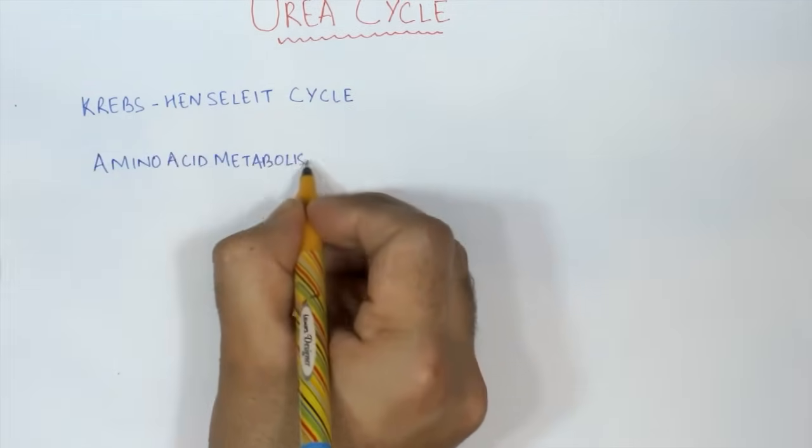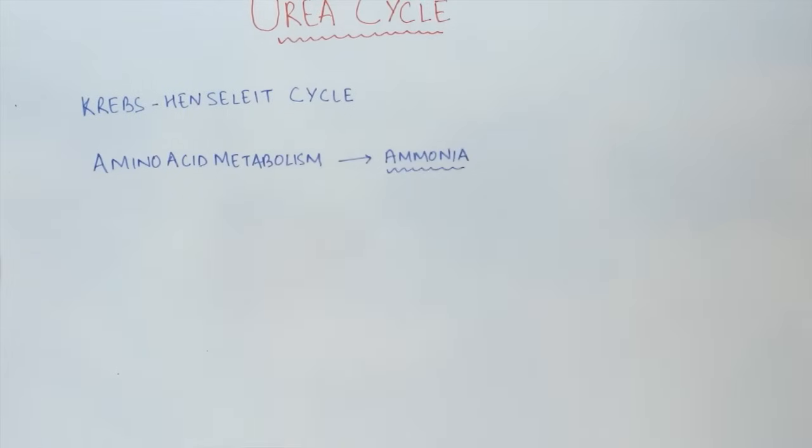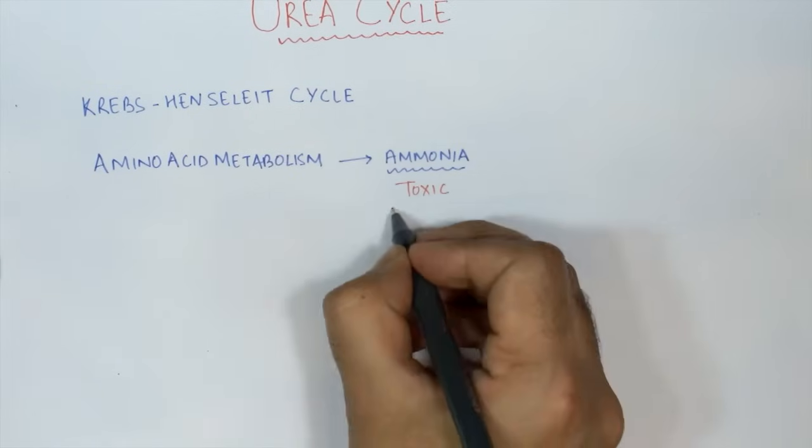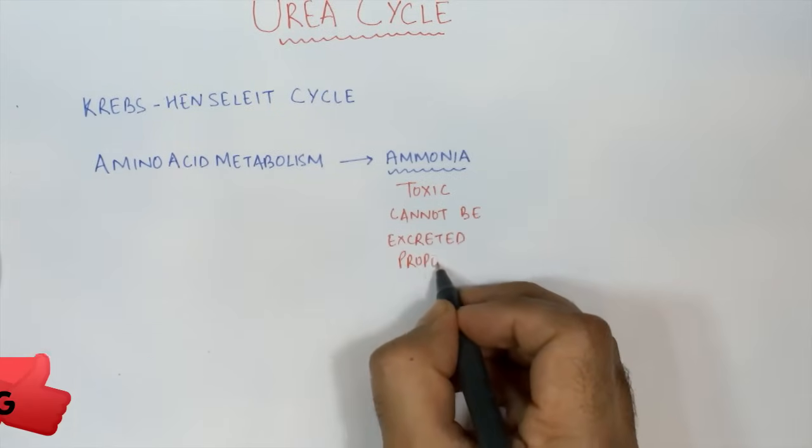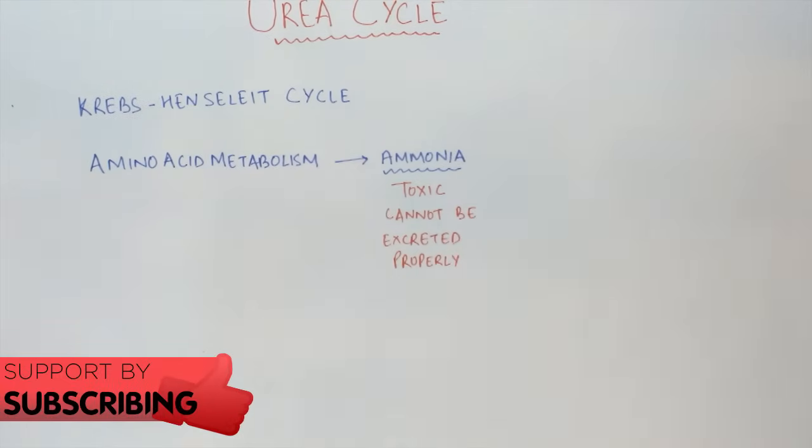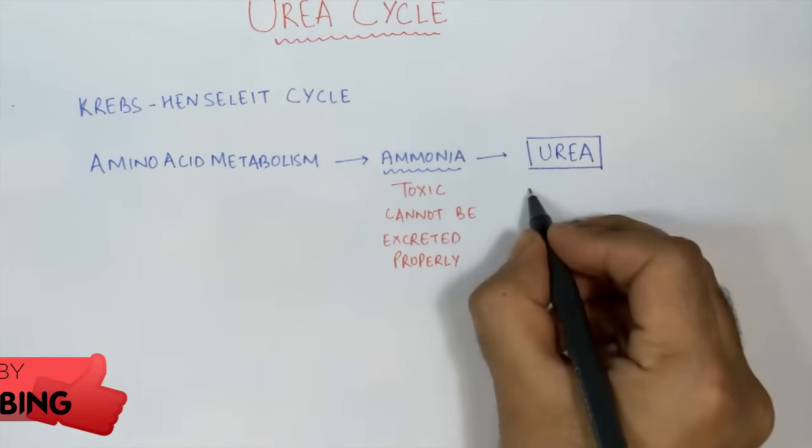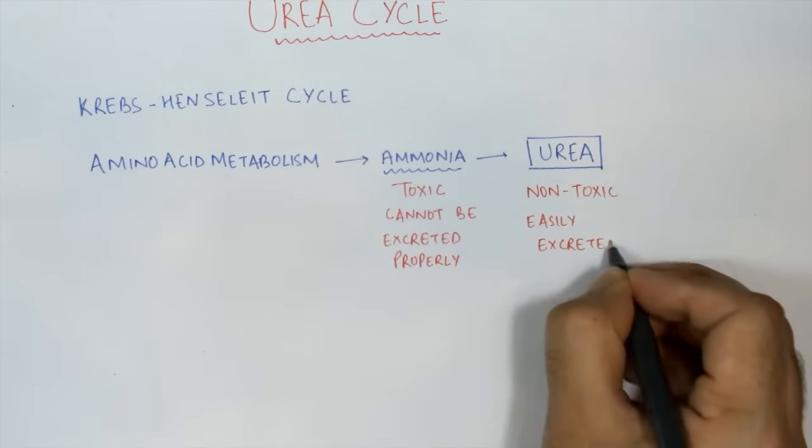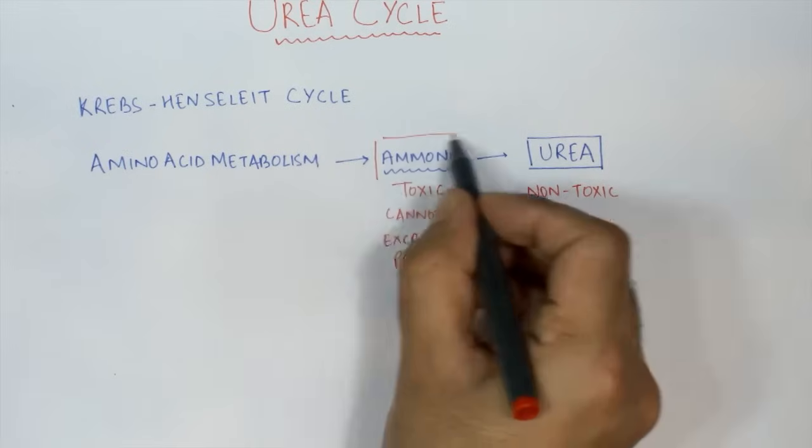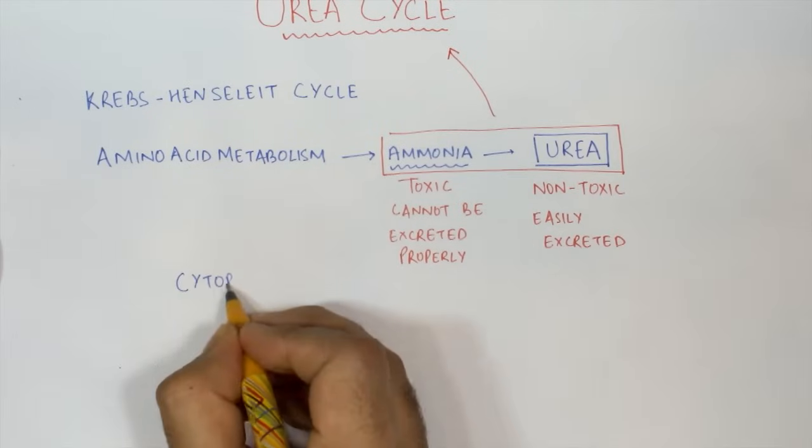As you may know, amino acid metabolism produces free ammonia. This ammonia is toxic to the body and cannot be excreted properly. The urea cycle is a biochemical pathway in the body which converts free ammonia into urea. Urea is comparatively non-toxic to ammonia and can be easily excreted by the body in urine, and this conversion of ammonia into urea is known as the urea cycle.